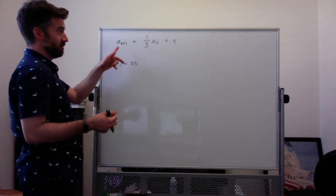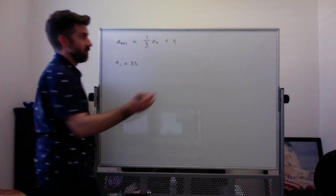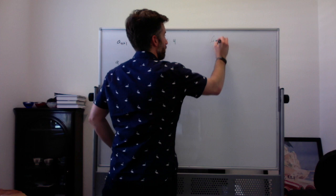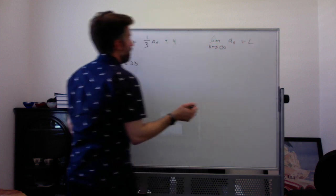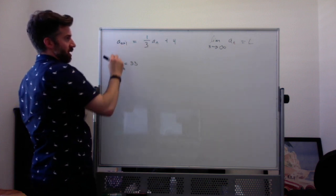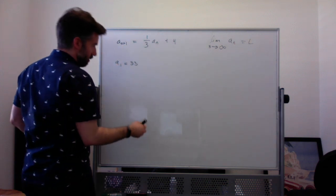So to find the limit, all you really do is you just substitute an L for both of these. So if we're saying the limit as n goes to infinity, obviously n is equal to L, I'm just going to replace each of these with L and then solve for L.